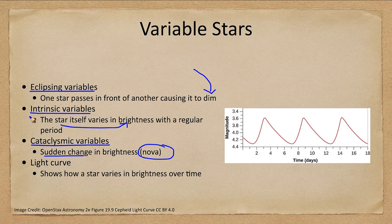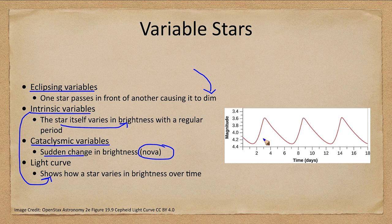Intrinsic variables will give us a light curve, which shows how the star varies in brightness over time. When there's a regular pattern for certain types of stars, we can actually use that to determine distances.